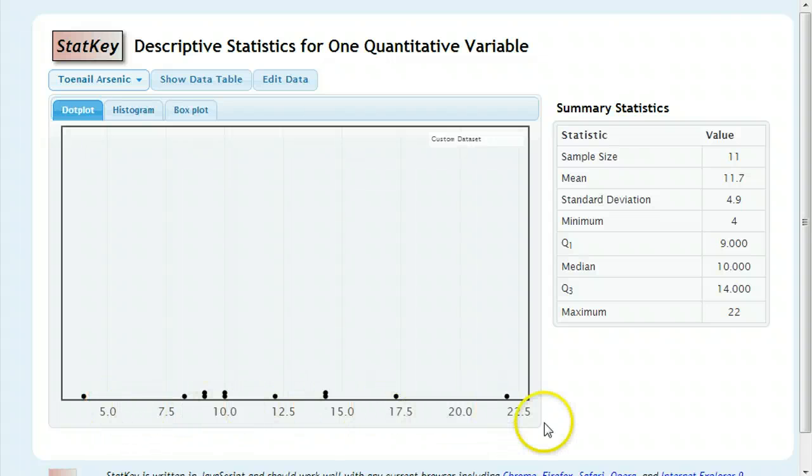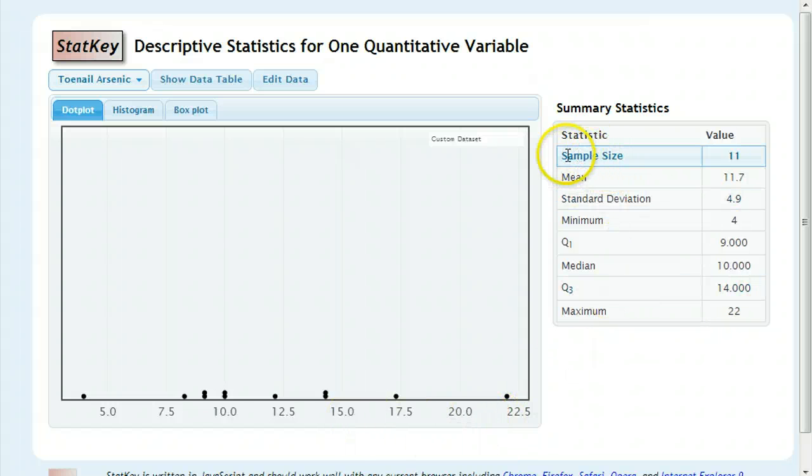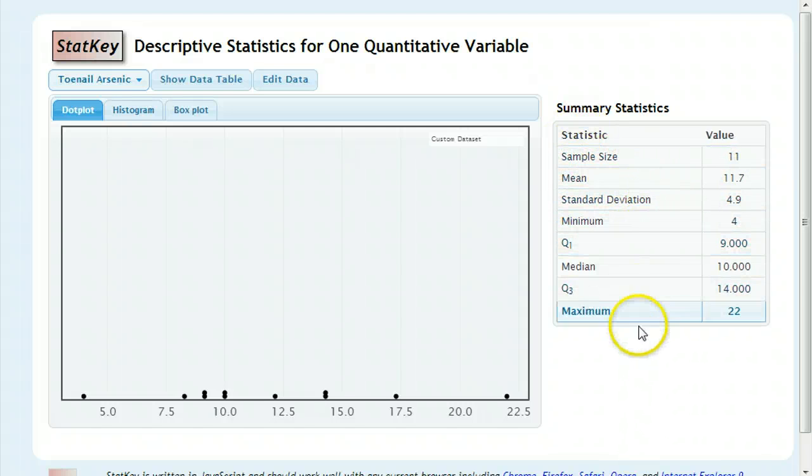And it gives you this graph, this dot plot. And sometimes this will be very useful. Sometimes you won't need this as much. What we're going to focus on right now, though, is over on the right. You'll see these summary statistics. It says sample size, mean, standard deviation, and then what we'll call the five-number summary.